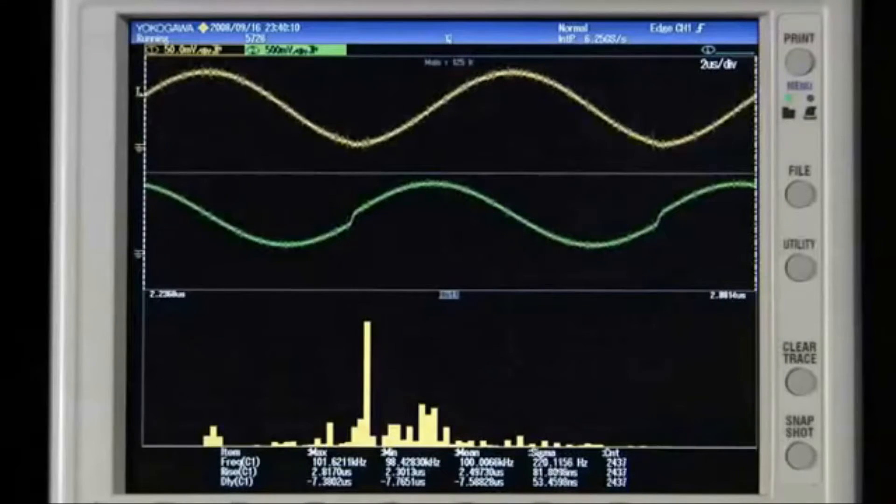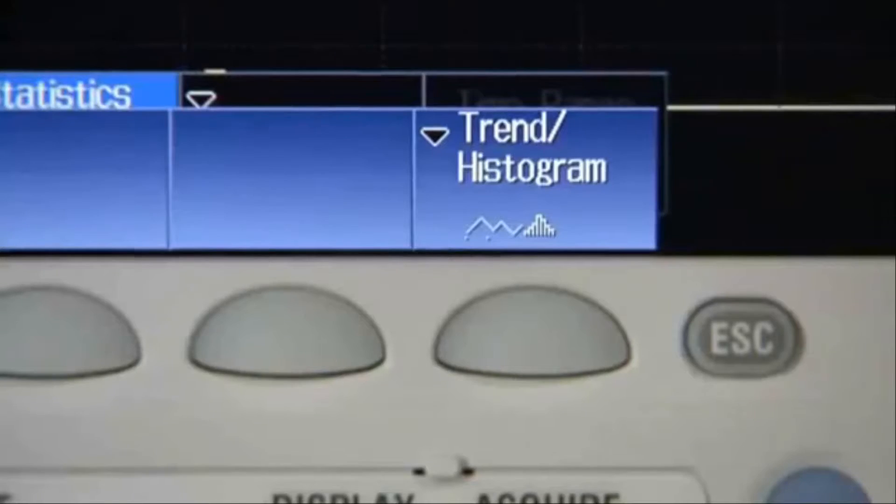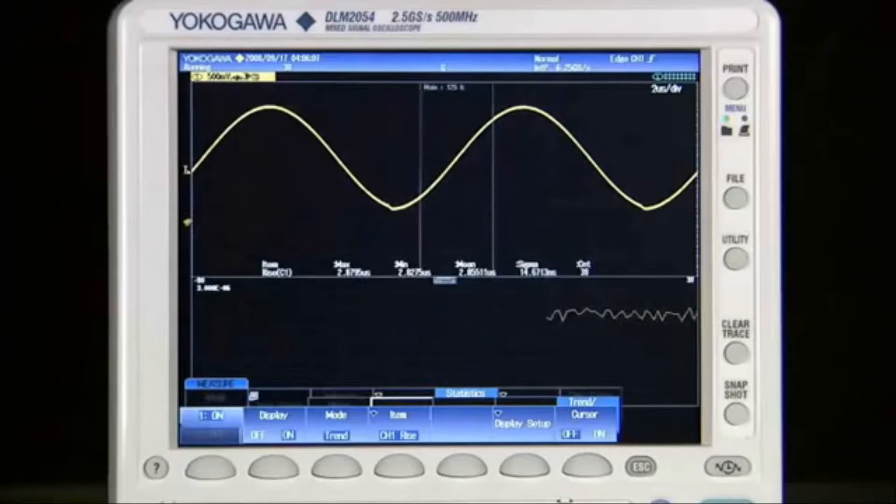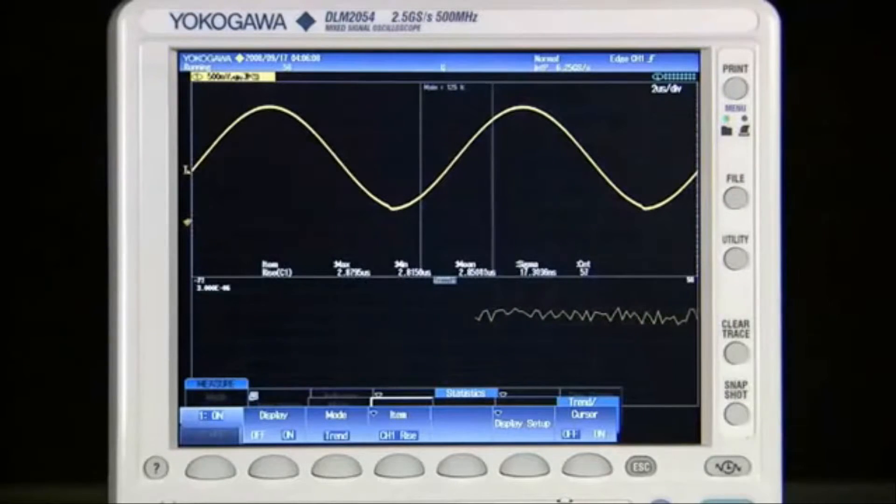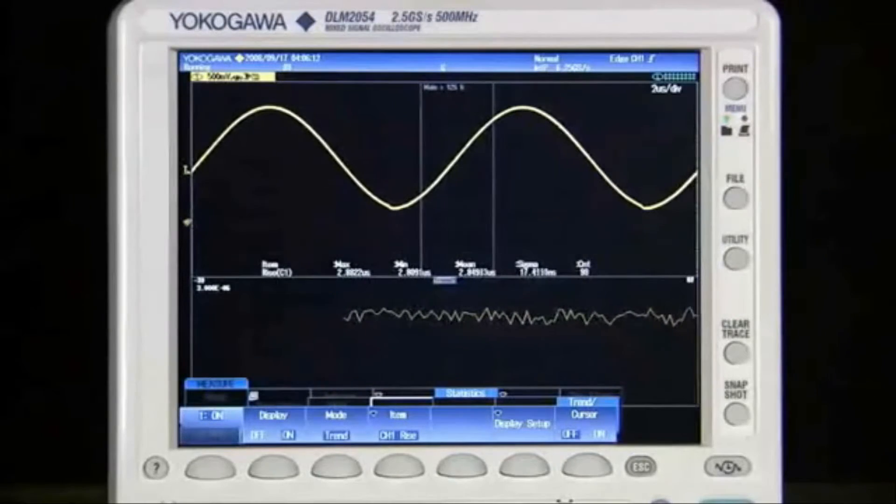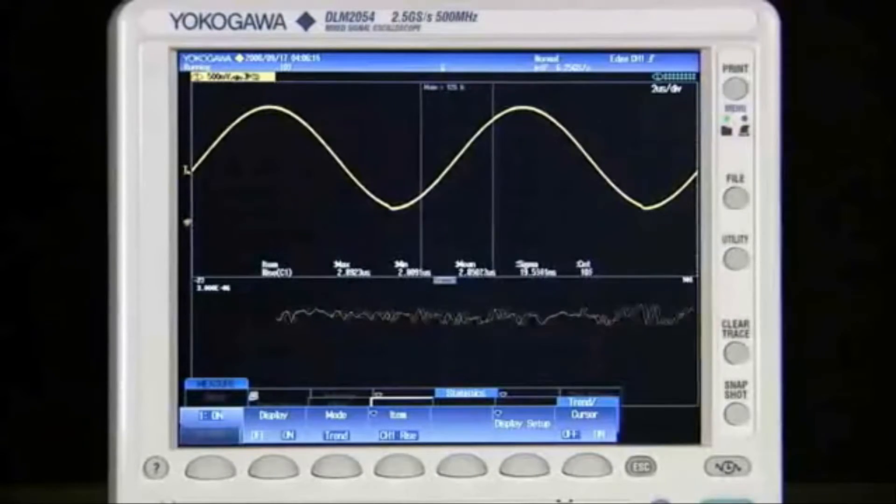The DLM2000's analysis engine can also create trends and histograms. For example, you can monitor rise time trended over several minutes. This gives you insight into stability or long-term behavior of your signals with changes in temperature or other system components.